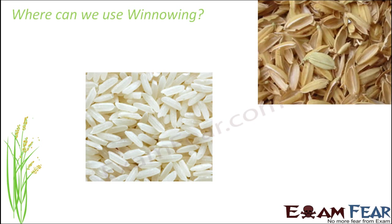A common application of winnowing is to separate grains from the husks. You have stalks with multiple grains, and those grains have their coverings. If you compare the size of the grain and the covering, they are almost similar in size. But when you look at their weight, the grains are a lot heavier and the husks are a lot lighter.